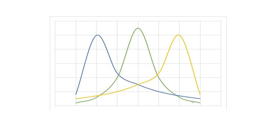Most parametric tests require your data to look something like the green normal curve, although variations are allowed. It doesn't need to be perfectly normally distributed, just approximately. When you have data that's either positively or negatively skewed, there are several options to transform the data to more closely resemble a normal distribution.